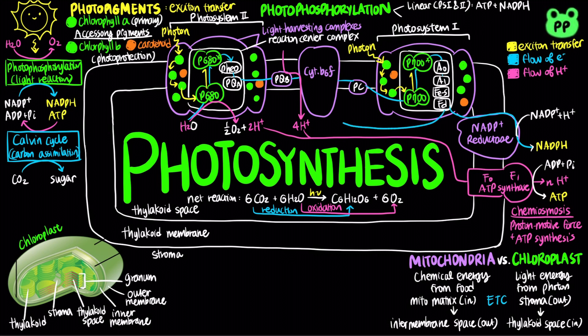Besides linear electron flow, photophosphorylation may also involve cyclic electron flow, in which ferredoxin transfers electrons back to cytochrome B6F instead of NADP+.